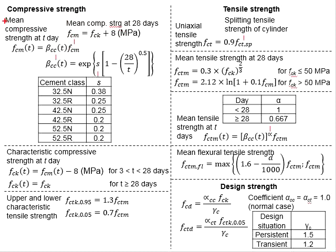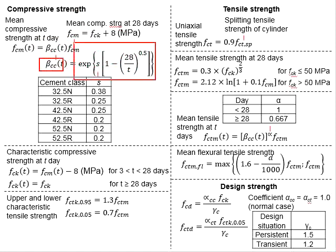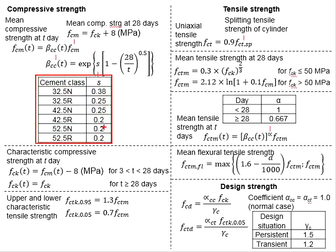For the mean compressive strength at any specific day, FCM is to be multiplied with a factor. The factor beta_CC is given by the formula here. T represents the day of concrete age, and S is dependent on the cement class — you need to know the strength class and type of cement, whether it is normal cement or rapid hardening cement.